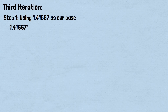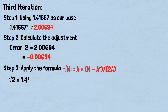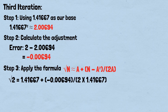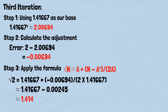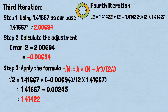Third iteration: using 1.41667 as our base, 1.41667² ≈ 2.00694. Error: 2 minus 2.00694 equals negative 0.00694. Apply the formula: √2 ≈ 1.41667 − 0.00245 ≈ 1.41422. Continuing this process, after the fourth iteration: √2 ≈ 1.4142135.